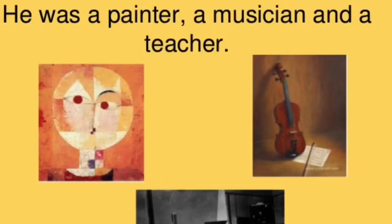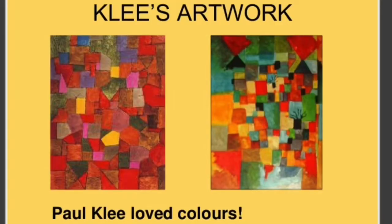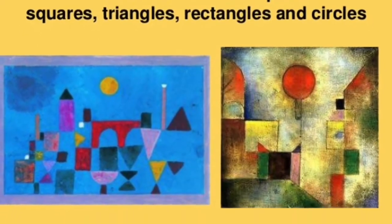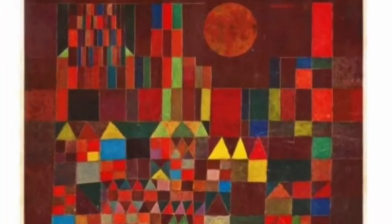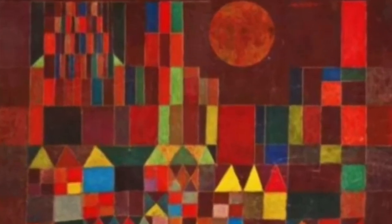If you were in my first grade class last year, we talked about Paul Klee. He made lots of paintings with simple shapes. This is one of his most famous paintings called Castle and Sun. What shapes do you see in this picture?